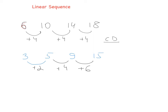This is called the first difference. Now let's look at the second difference. What's the difference between 2 and 4? That's plus 2. What's the difference between 4 and 6? Also plus 2. The second difference is the same — it's constant. When the second difference is the same, we are talking about quadratic sequences.